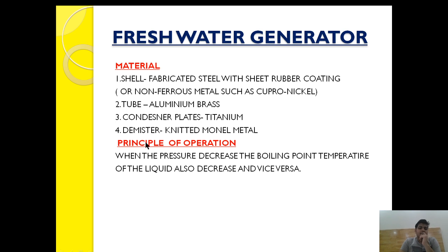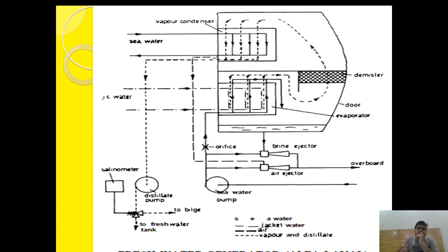The first question generally asked in the exam is on which principle does the fresh water generator work. The fresh water generator works on a very simple principle: when the pressure decreases, the boiling point temperature of the liquid also decreases, and if the pressure increases, the boiling point temperature also increases. Using that principle, we have designed a pressure generator which can give us fresh water by extracting it from sea water.